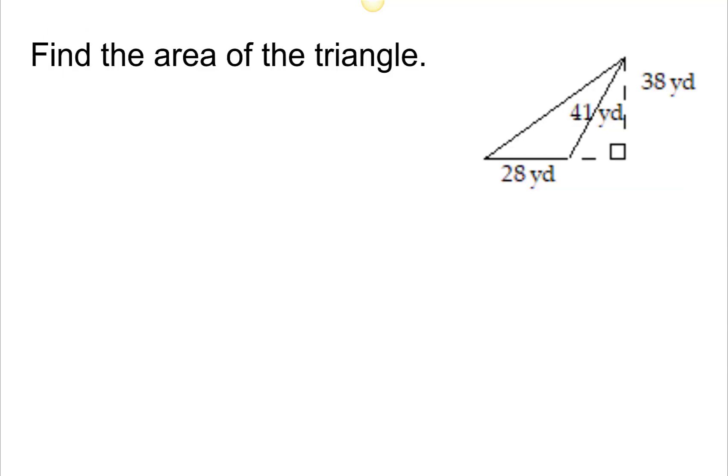Find the area of the triangle. Notice in this diagram, there's a height here, and then this 41 is actually the length of that side. The area formula for the triangle is one-half of the base, in this case 28 yards, times the height, which is 38 yards.